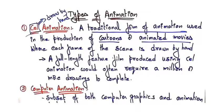Types of animation - the first is cell animation. Cell animation is drawn by hand. It's a traditional form of animation used in the production of cartoons and animated movies where each frame of the scene is drawn by hand. A full-length feature film produced using cell animation would often require a million or more drawings to complete.